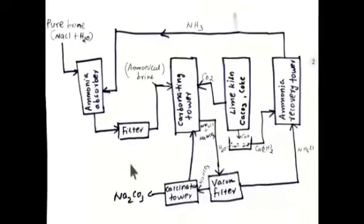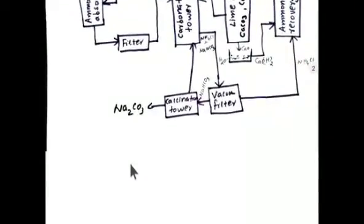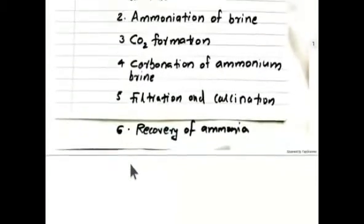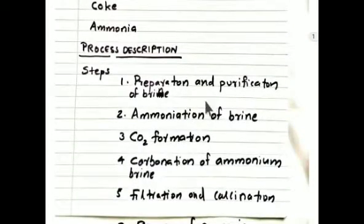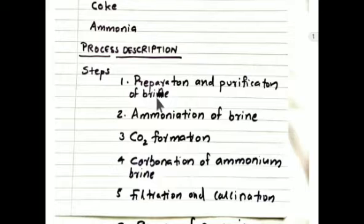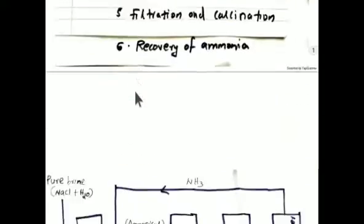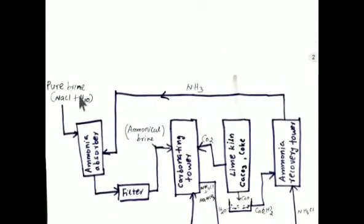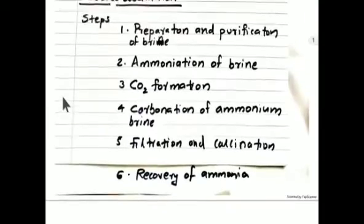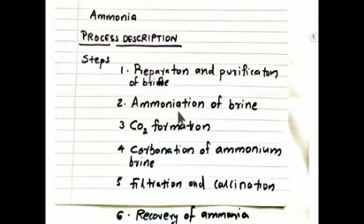We will discuss each step using a block diagram and chemical equations. The first step is preparation and purification of brine. Salt is one of the raw materials, obtained from seawater. This salt contains impurities like calcium and magnesium compounds. We remove all these impurities to prepare pure brine, which is salt plus water.